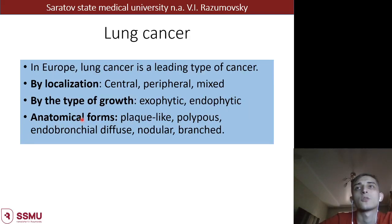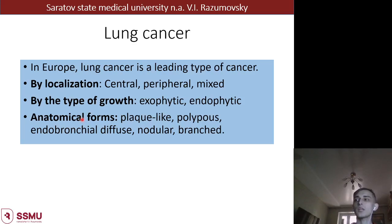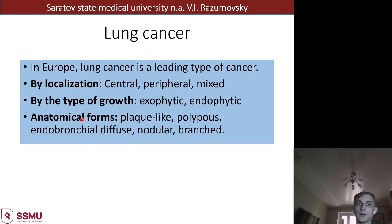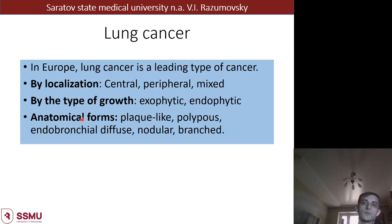The next pathological process to discuss is lung cancer. Lung cancer is a really common disease nowadays and takes first place among all tumoral diseases in the male population. According to localization we can see central, peripheral, and mixed types of lung cancer. By type of growth we can see exophytic and endophytic. Anatomical forms include plaque-like, polypous, endobronchial, nodular and branched types.